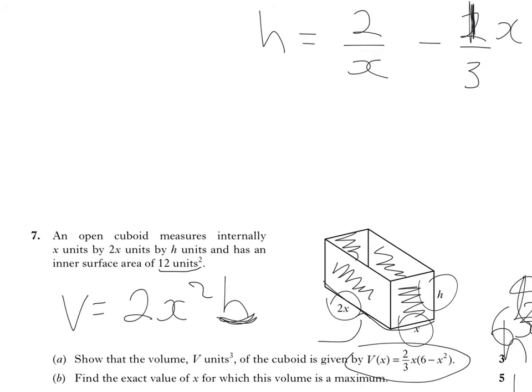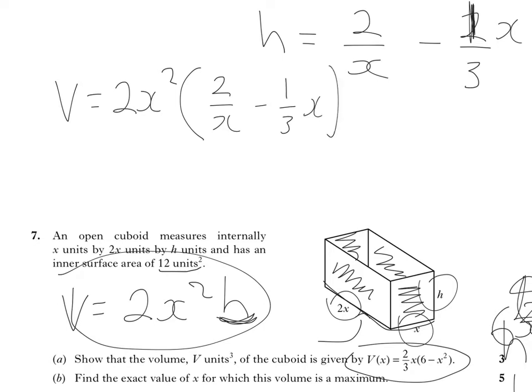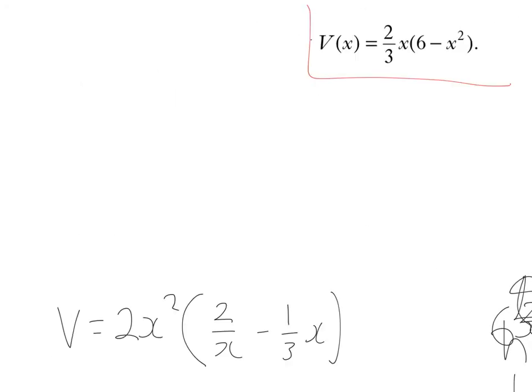I'm now going to return to my formula here for the volume. So that's 2x²h. So the volume now is 2x², and I'm going to replace h with 2/x minus 1/3 x. Here's the answer that I'm looking to get to, so I'm going to just keep an eye on that. Expand this out. So 2x² times 2/x will give me 4x² over x, which is just 4x. 2x² times 1/3 x, so that's going to be 2/3 x³.